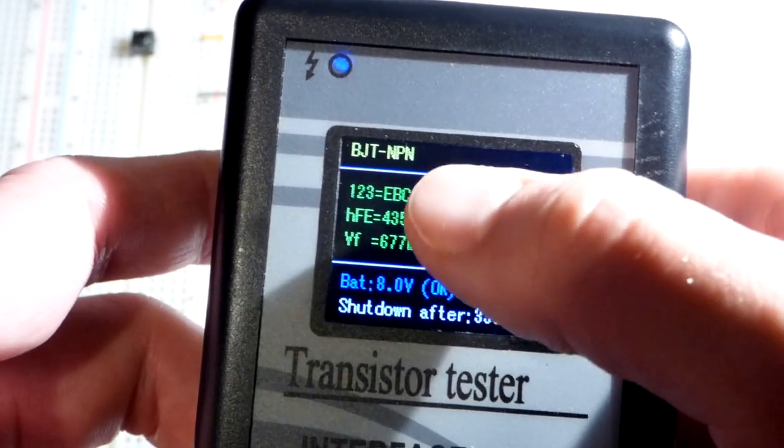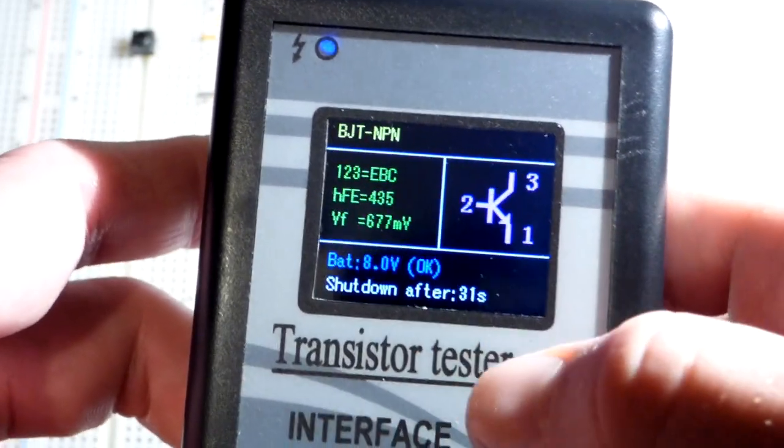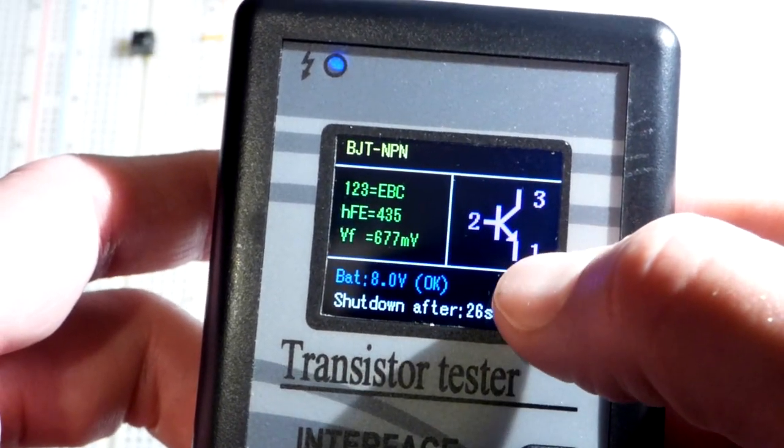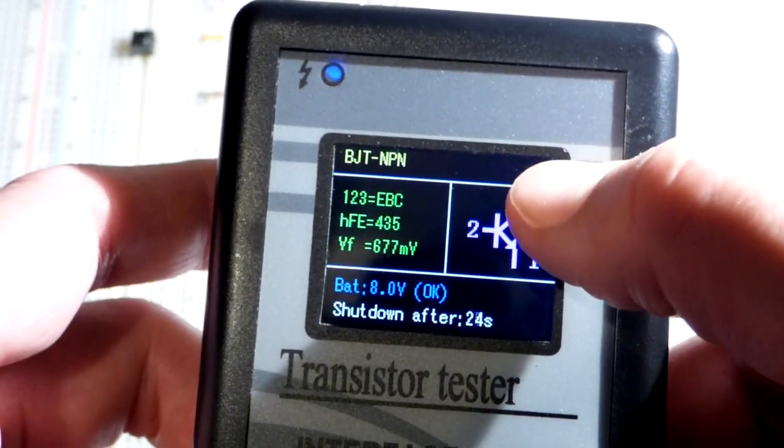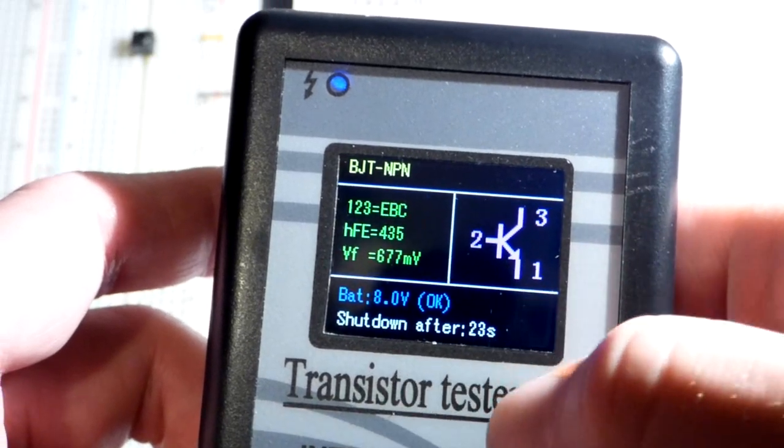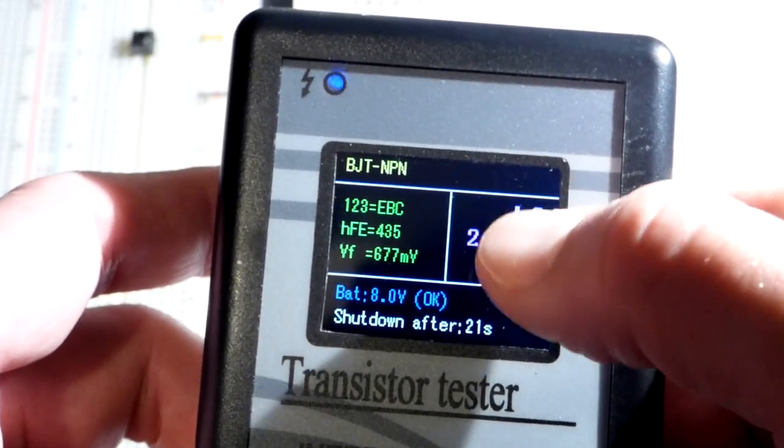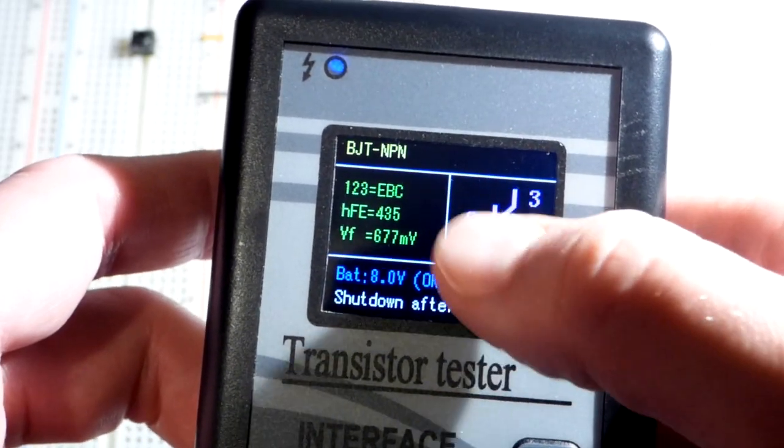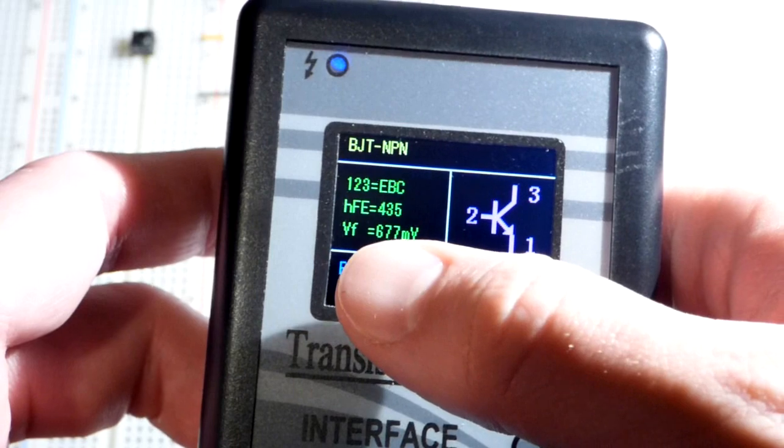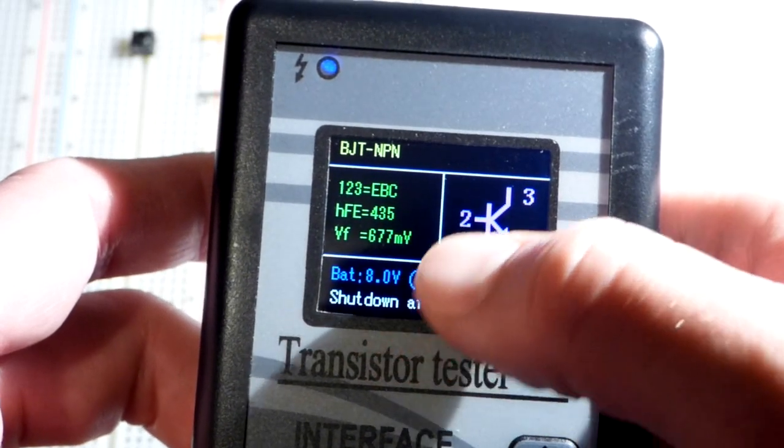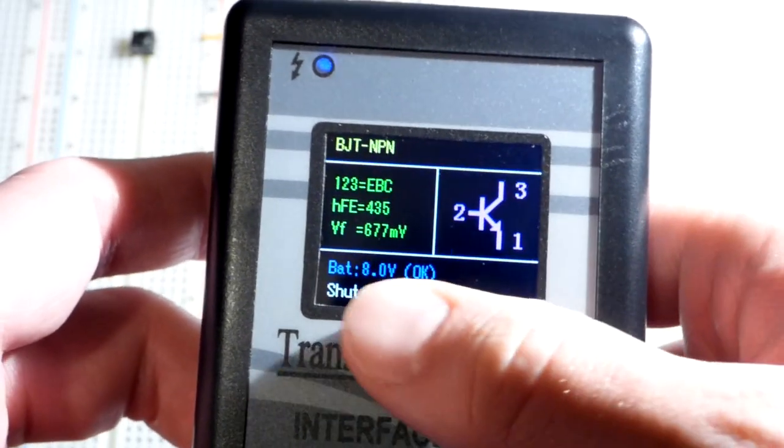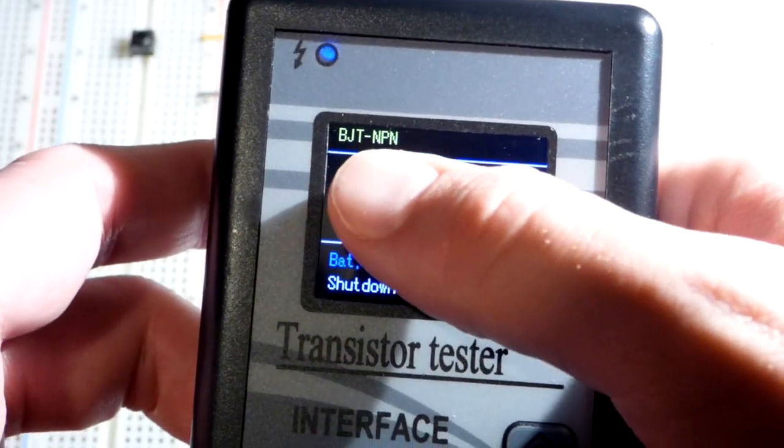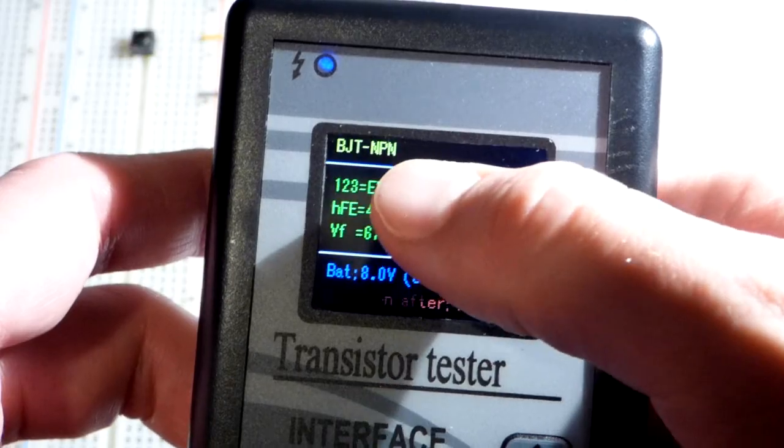And it automatically tests, does everything. So now you can see the schematic there. One is the emitter. You can see 1, 2, 3, EBC. So emitter base collector. It's telling you the gain, which means for every milliamp of current you put through the base, you can expect about 435 milliamps allowed from collector to emitter like that. And forward voltage, this is basically a diode in this area. And it's going to take a little less than 0.7 volts before it really starts conducting.